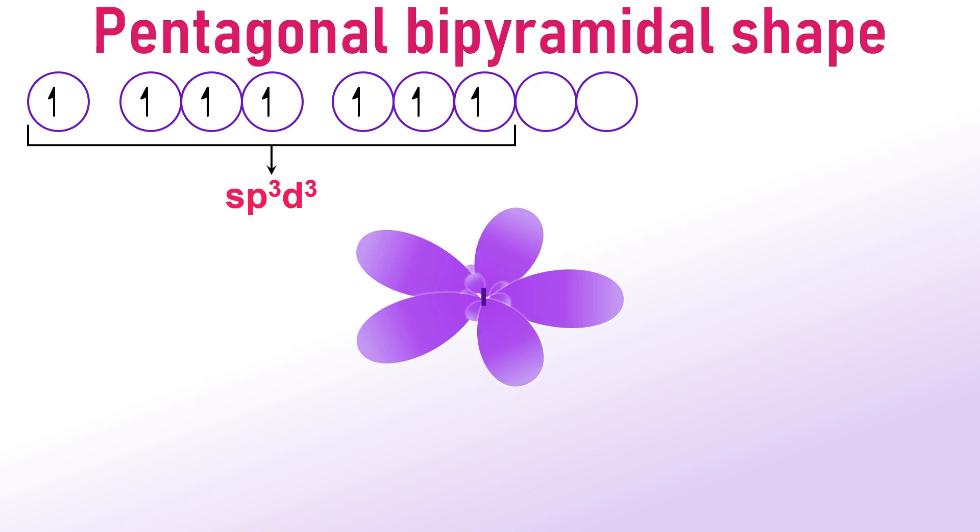Out of 7 sp3d3 hybrid orbitals, 5 are positioned in a pentagonal planar arrangement forming 72 degrees angles with each other. These are referred to as equatorial orbitals. The remaining two orbitals are situated above and below the pentagonal plane and are referred to as axial orbitals, making 90 degrees angles with the equatorial orbitals.